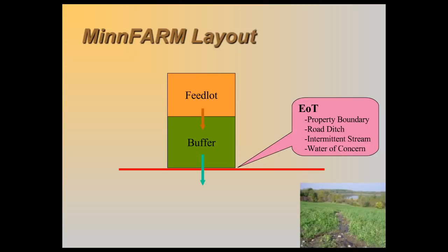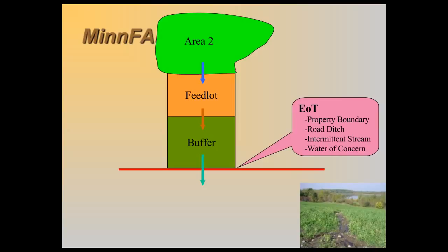Two additional factors can play a role. Water that runs onto an open lot comes from Area 2 — this can be roof water or land uphill that drains across a feedlot. Area 3 may also be roof water or land uphill, but water from Area 3 drains straight into the buffer and not first across the feedlot.